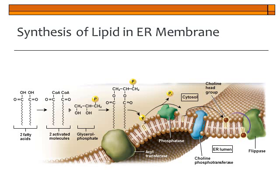We need our fatty acid tails, which you can see coming in on the left side of this image. Our two fatty acid tails need to be activated, and in addition to the fatty acids, we need a glycerol phosphate molecule. We attach our two fatty acids to the glycerol phosphate using enzymes called acetyltransferase and phosphatase. Once your phospholipids are created, they'll be found in the smooth endoplasmic reticulum, and from there that newly created phospholipid can be transferred to where it's supposed to go in the cell.